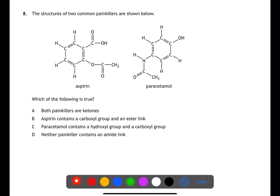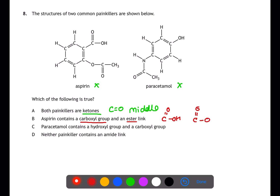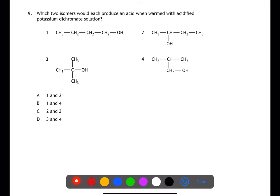Question eight looks at functional groups. Both painkillers are not ketones — a ketone is a carbonyl group within the middle of a chain, and here the C=O groups are part of larger functional groups. Aspirin contains a carboxyl group (C=O, OH) and an ester link. Paracetamol contains a hydroxyl group (OH) only — not a carboxyl group. Neither painkiller contains an amide link (C=O to NH), which we can see in paracetamol — therefore b is the answer.